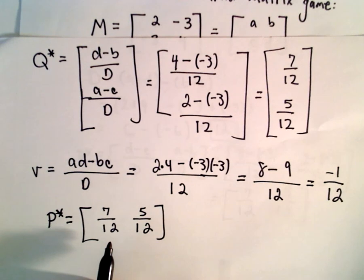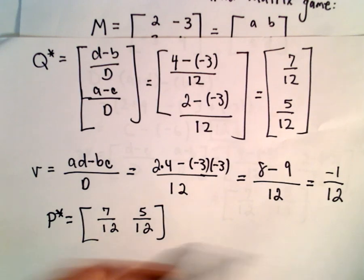it says that R should choose row 1 with a probability of 7 twelfths and row 2 with a probability of 5 twelfths. Likewise, the optimal strategy for the column player, which is given by Q star,